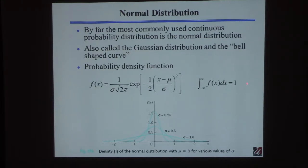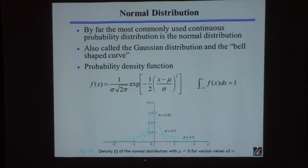If you were to perform the integration from minus infinity to infinity, you'd find it equals one, as it should. This is what it looks like — and this should look pretty familiar to you. I'm plotting this function f, picking mu to be zero so they're all centered about zero, and showing what it looks like for different values of sigma. If sigma is small, it has a peak at zero with not much variation about the mean — small standard deviation. If sigma gets large, you see a much wider spread.